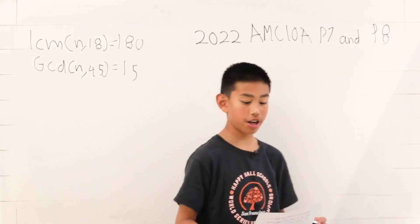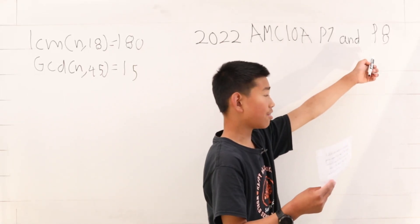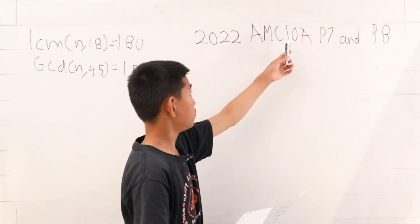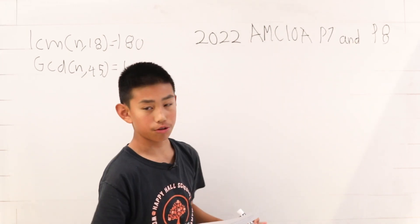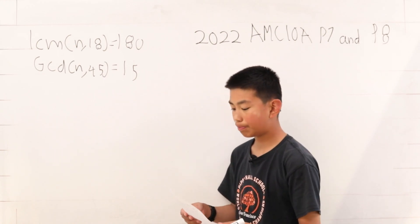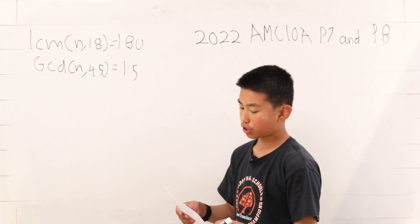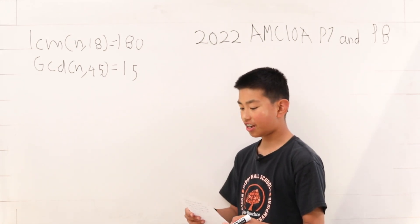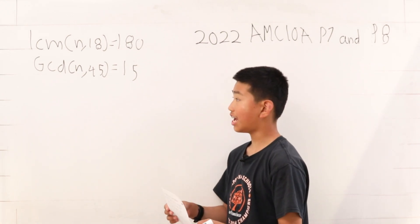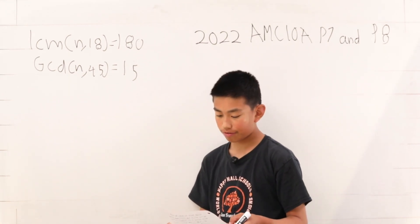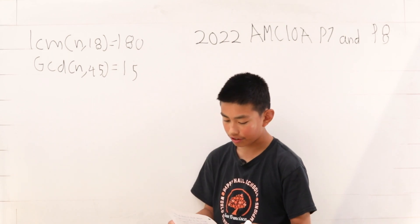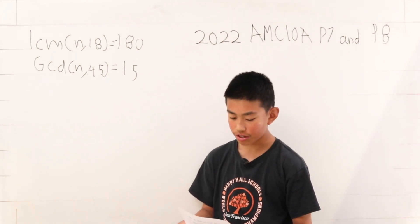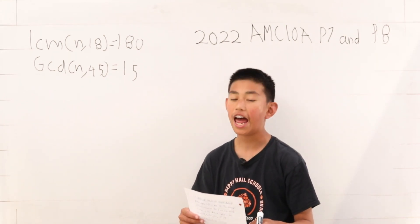All right, so today we're solving problem 7 and problem 8 from the AMC 10A of 2022. Let's start with problem 7. The least common multiple of a positive integer n and 18 is 180, and the greatest common divisor of n and 45 is 15. What is the sum of the digits of n?